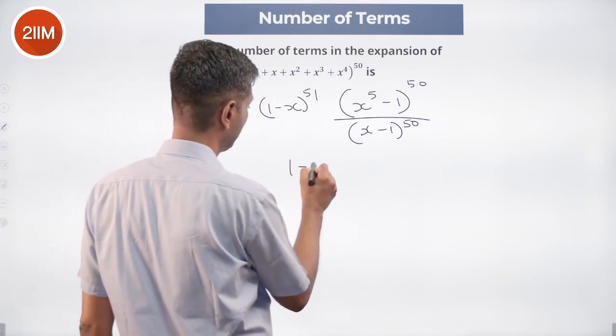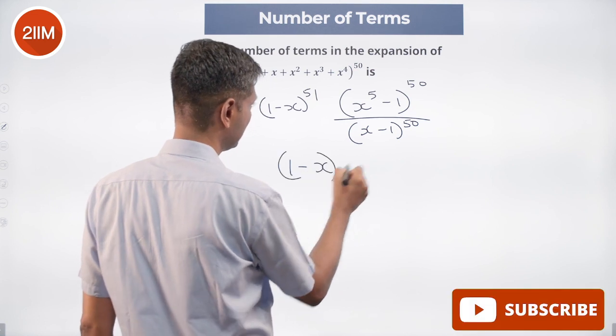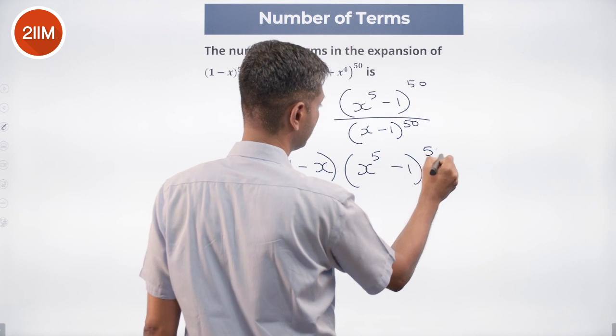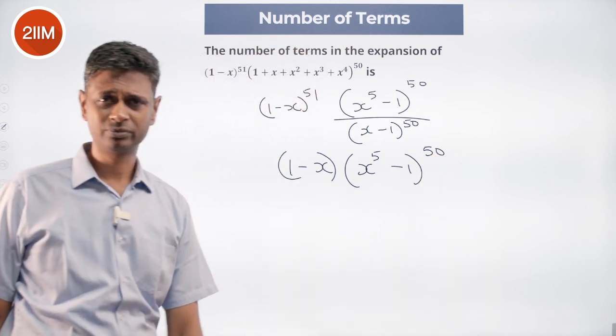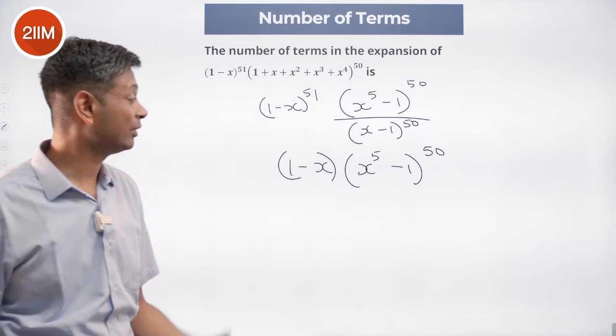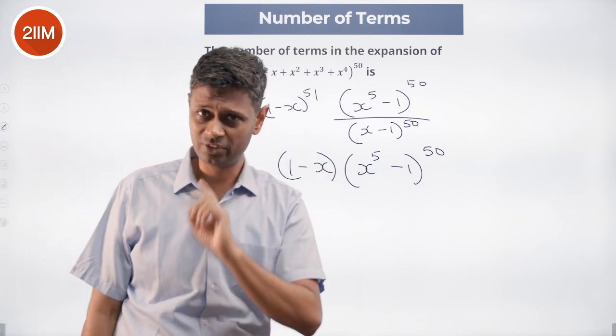So what I will be left with is 1 minus x into x power 5 minus 1 whole power 50. Nice, brilliant. Now that this giant thing is simplified to this simpler thing, not yet done, mind you, not that easy.